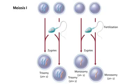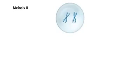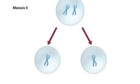In this scenario, either a trisomy or a monosomy results. Non-disjunction can also occur during meiosis 2. In this scenario, meiosis 1 occurs normally.